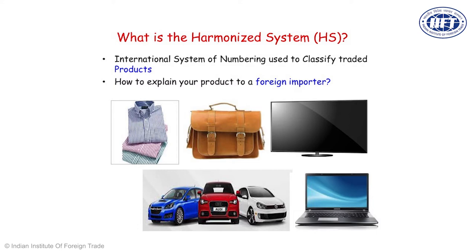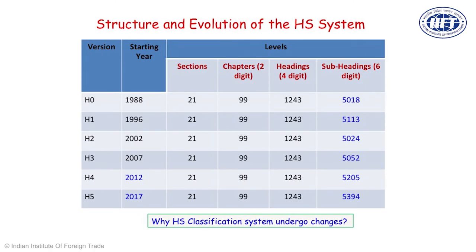The harmonized system, or HS system, is based on a classification which goes by even numbers: 2-digit, 4-digit, 6-digit, 8-digit, or 10-digit. At HS 2-digit, 4-digit, and 6-digit, the classifications are called chapter, heading, or subheading respectively. Below HS 6-digit, the 8- or 10-digit codes are called the tariff line.